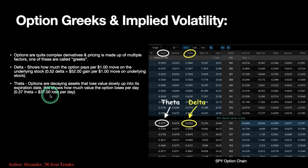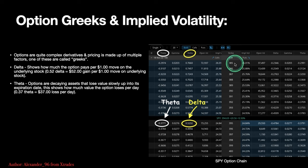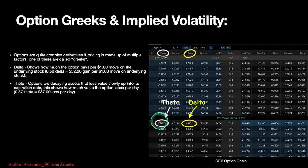As you get closer to expiration, theta gets a lot worse, which is why short-term contracts are so risky. It's usually why you just want to day trade them — you don't want to swing lotto tickets. Don't open anything expiring in eight days and hold it overnight; it's just risky because you have theta working against you. If it doesn't go in your favor, you're going to get punished.